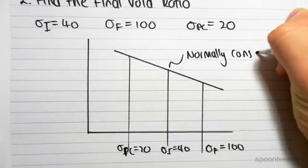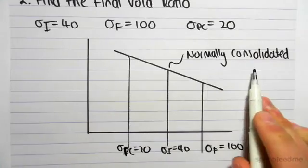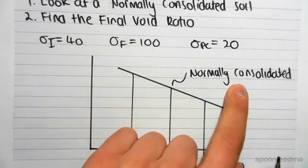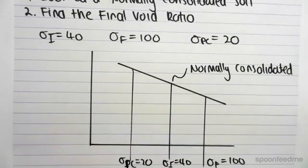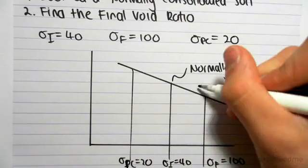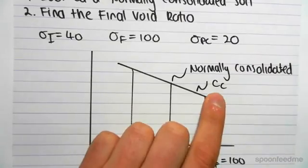Once again, in a question they could do one of two things for you to deduce that you're normally consolidated. They could give you this information and you would have to draw it and see that you're normally consolidated. Or they could just say, in a normally consolidated soil sample. And the reason we need to know that is we need to know to use CC, the compression index.